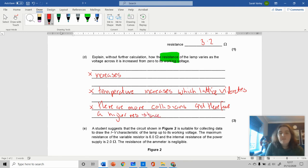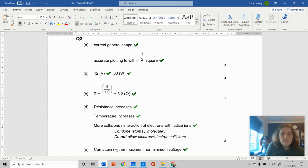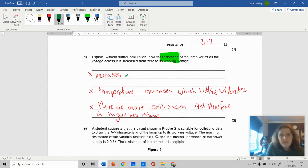Looking at the mark scheme, one mark for saying resistance increases, one mark for saying the temperature increases, and one mark for saying there are more collisions. Three marks - one for stating this. When you see an explain question, in your head you should have said 'because'.